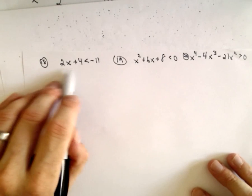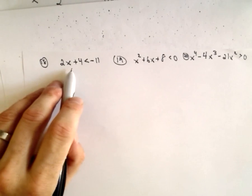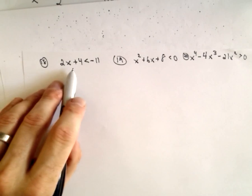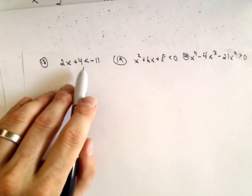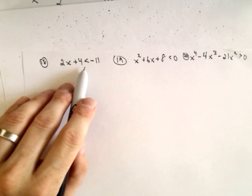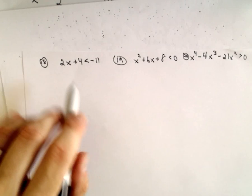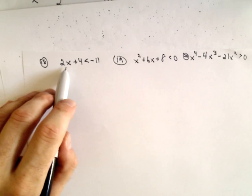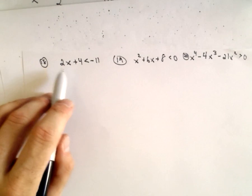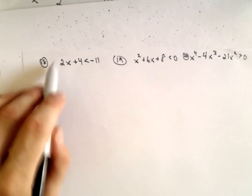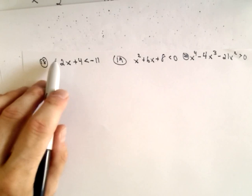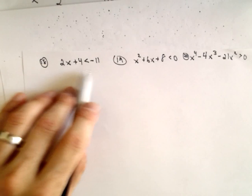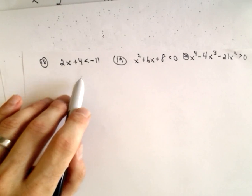For linear inequalities, it's the same thing as though it was an equation. The only thing you have to remember is if you multiply or divide by a negative number, the inequality flips.